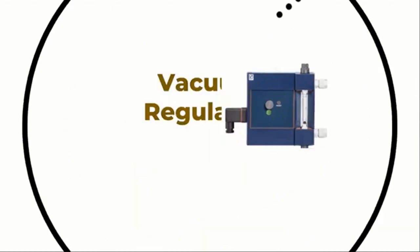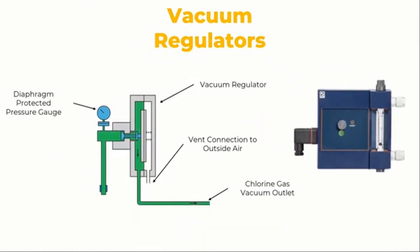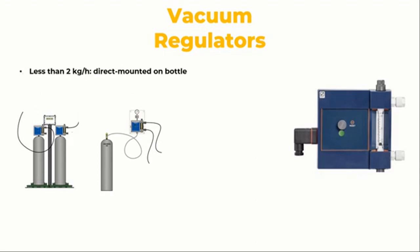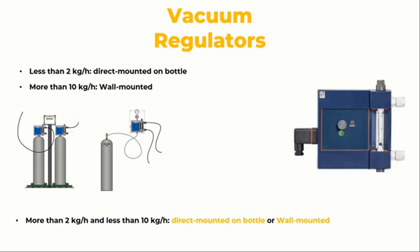The vacuum regulator unit keeps the chlorination under constant vacuum. To reduce the length of pressurized chlorine pipe, it should be placed as near as feasible to the chlorine supply container. It may be mounted on the wall or the cylinder. The type of mounting for the chlorometer is determined by the maximum chlorine flow rate required. It should be directly installed to the bottle for flow rates under 2 kg per hour, and wall mounted for speeds more than 10 kg per hour. It can also be directly fixed on a bottle or wall mounted for flow rates greater than 2 kg per hour and less than 10 kg per hour.